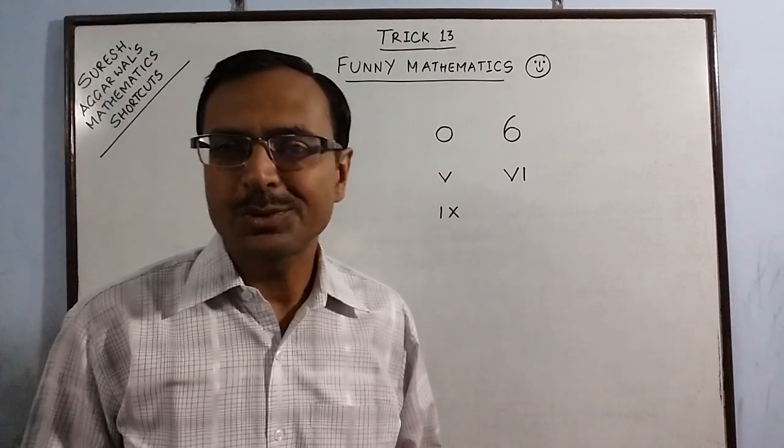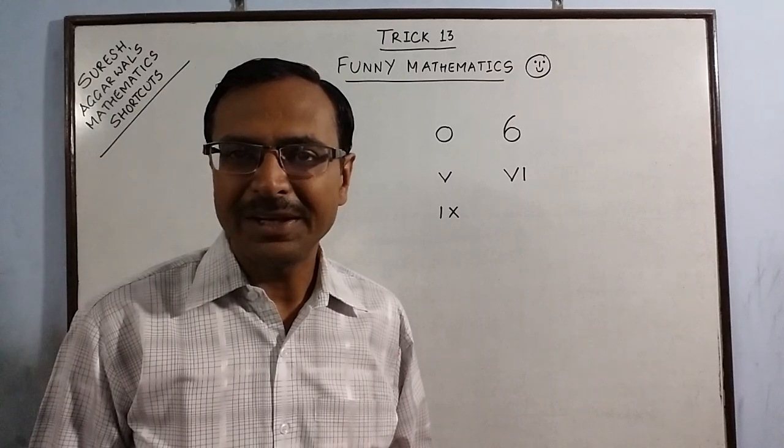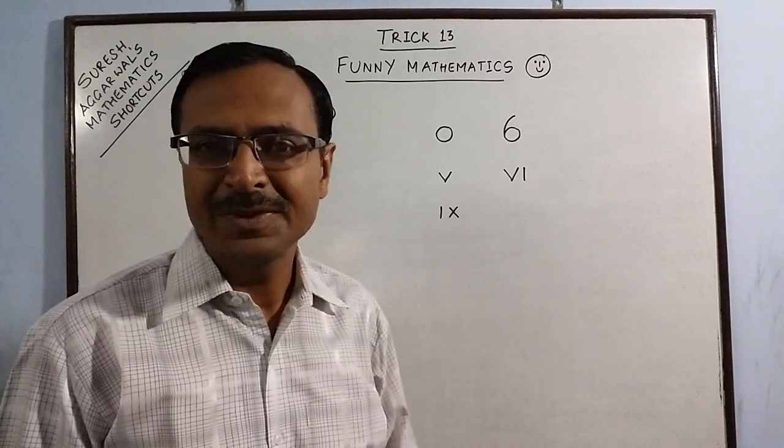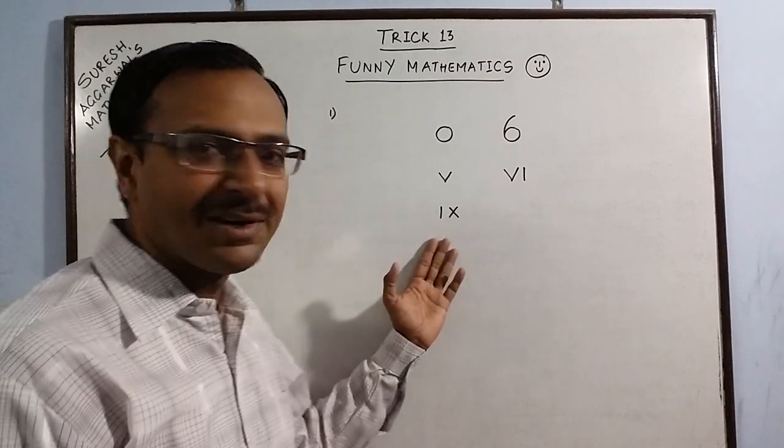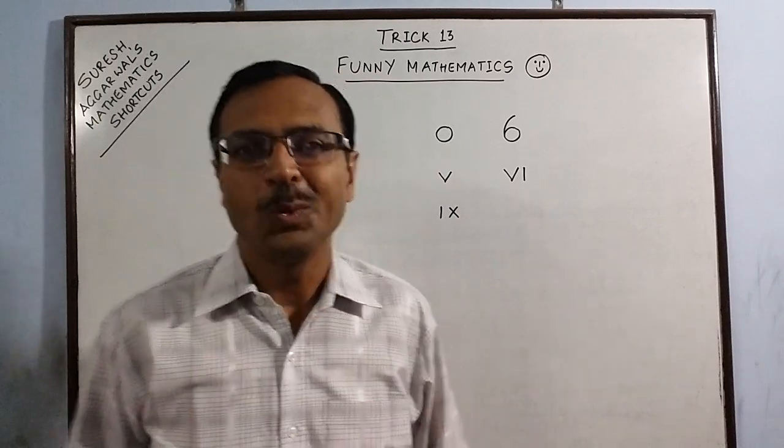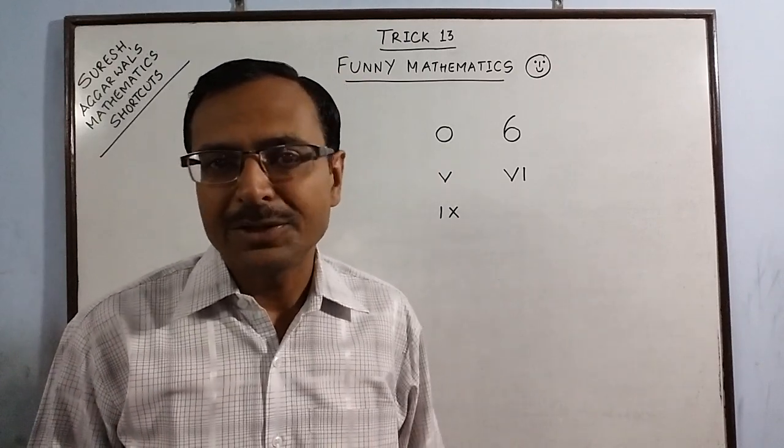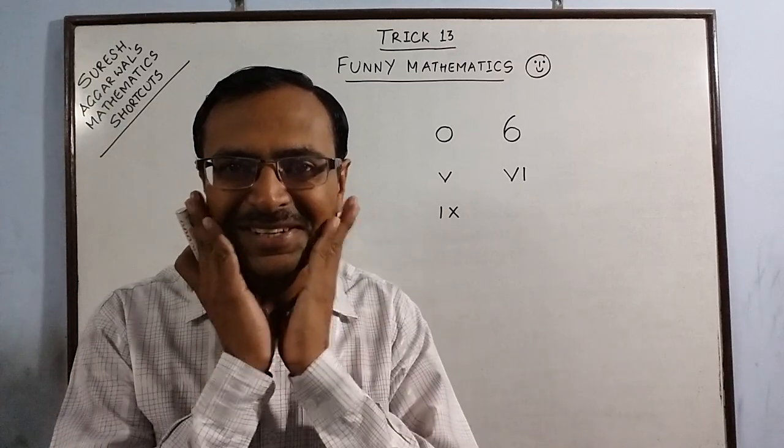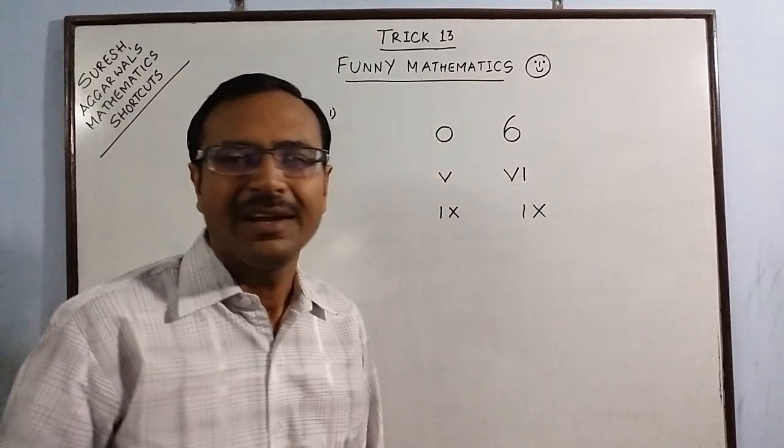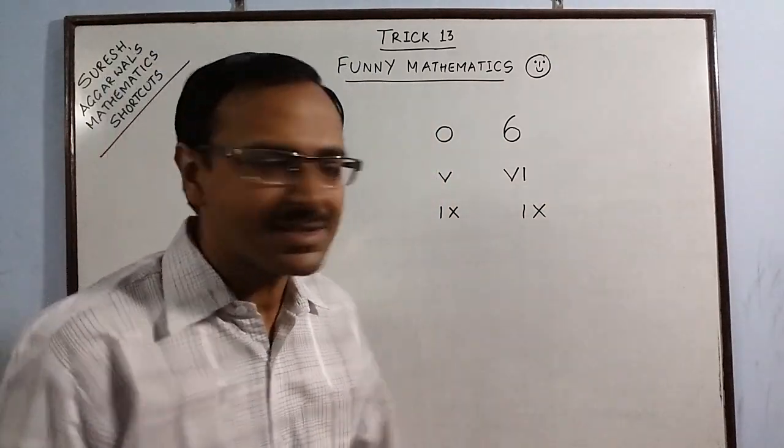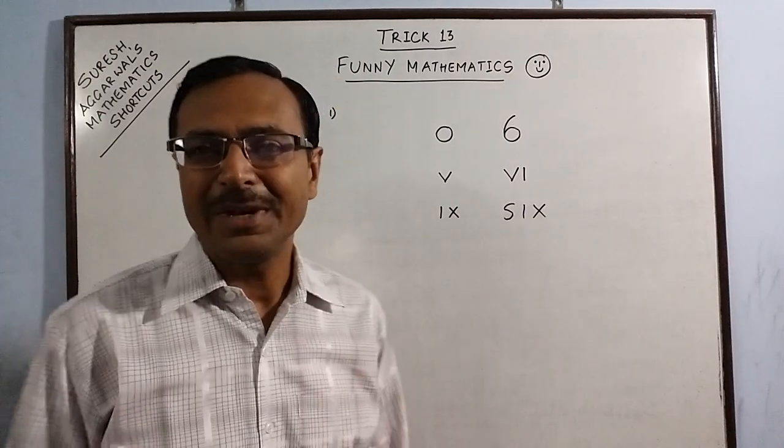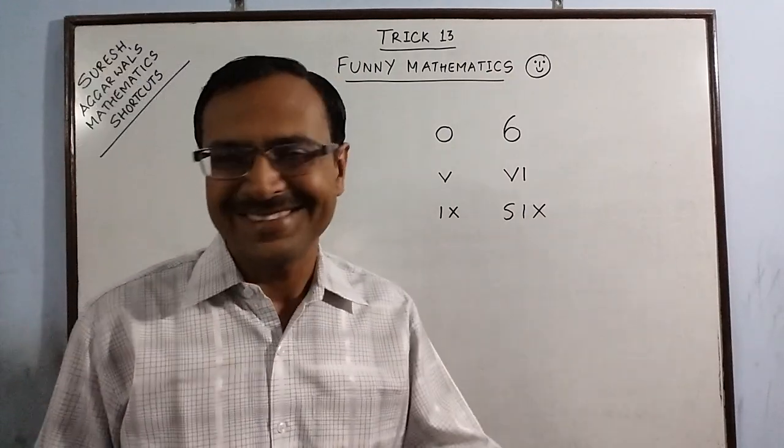Now most of the students will be thinking about numeral six, Roman six. So how can we make a six out of a Roman nine? The answer to this is again very simple. Something which will make the students do like this. This nine can be very easily converted into a six just by putting an S in front of it, which makes SIX as a six.